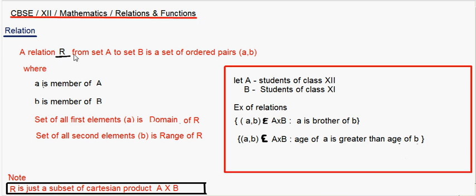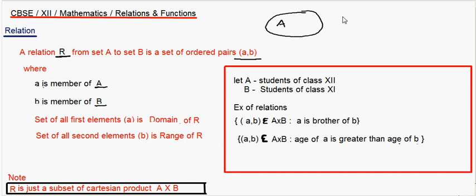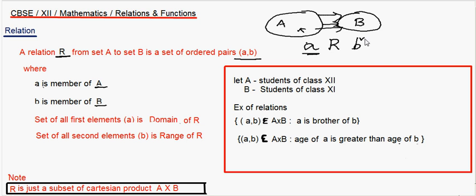A relation R from set A to set B is a set of ordered pairs, where (a, b) is said to be an ordered pair, where a is a member of set A and b is a member of set B. This is how you relate them. Suppose if I consider set A and another set B — if there is a relation between set A and set B, then you need to write it as 'a is related to b', denoted as aRb. That means a is related to b.